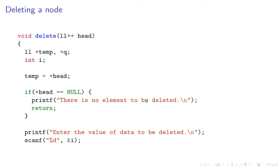Let's get started with deleting a node. I have passed a pointer to pointer to head, because if the first node is to be deleted then the head pointer gets modified. What I do first is save the head pointer in temp. Note that I have declared two pointers here and then an integer i. If head is null, that means the list is empty, so we have nothing to delete and we simply return.